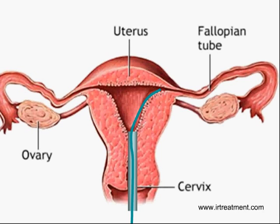Once this is done, medical dye is injected through the tube to clear the debris away. This procedure is called fallopian tube recanalization and is the least invasive of all the procedures to remove blocks in the fallopian tube.